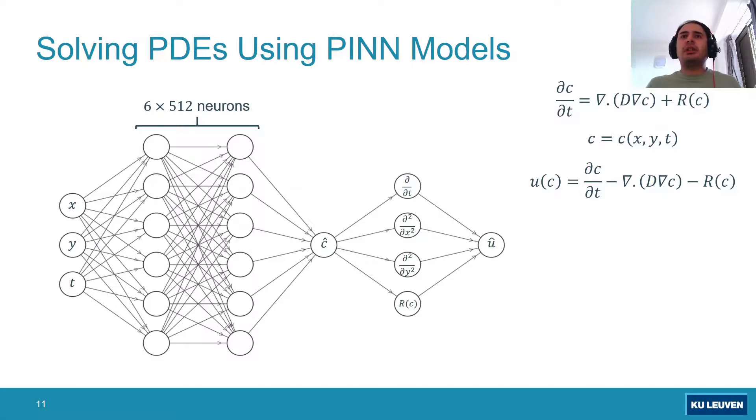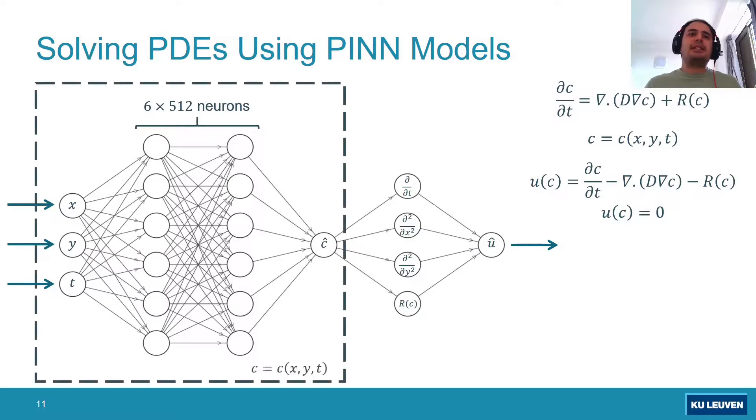To solve PDEs using PINN, this is the PDE that has only the diffusion and reaction term, and C is a function of coordinate system X, Y, and T in 2D space. This is a model that can approximate C by having the input of X, Y, and T. Then we can define U such that we move all the terms to the left. Then by automatic differentiation, we can derive the derivative of the network and calculate U. To increase accuracy, we increase the number of layers and neurons in each layer. This is actually a deep neural network.